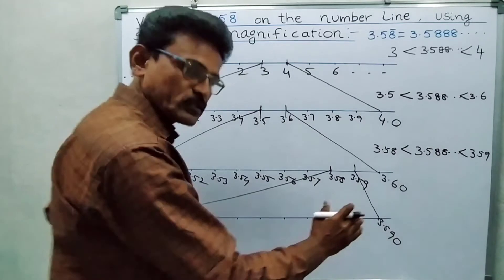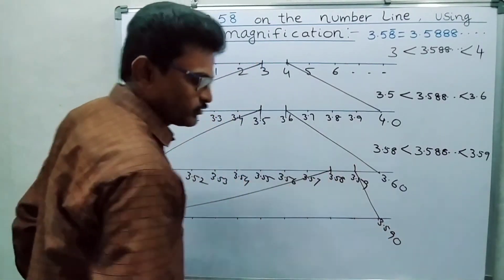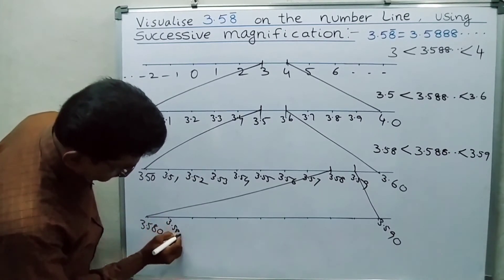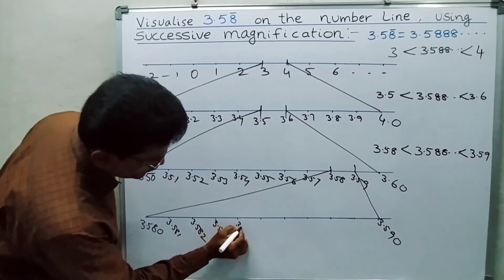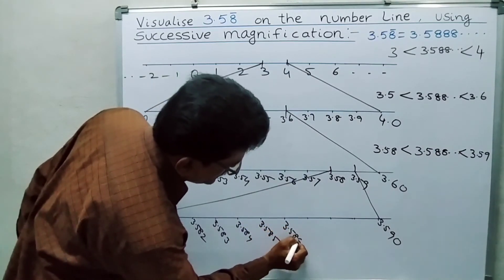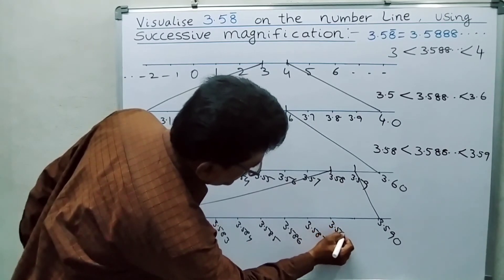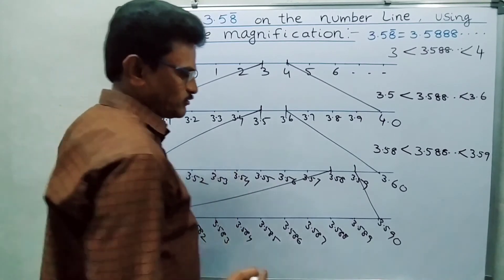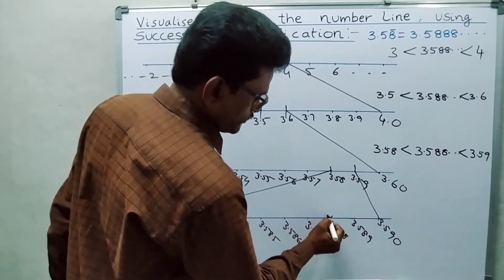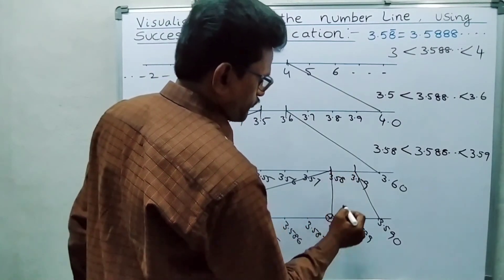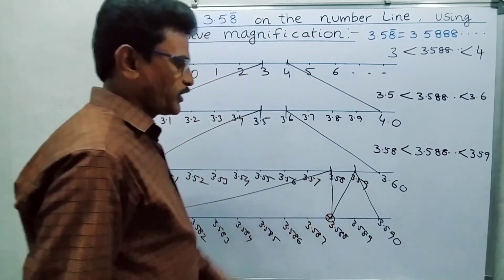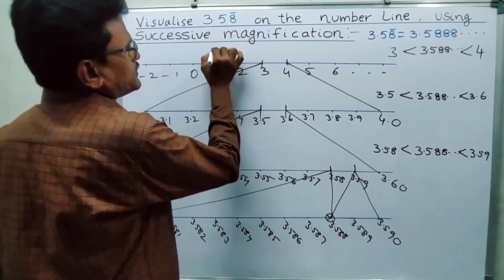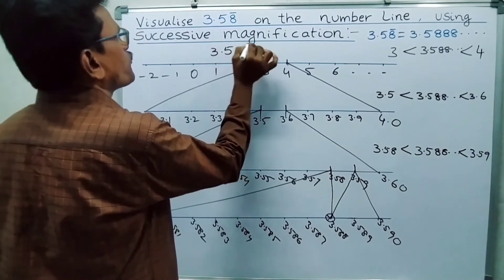Now, once again mark 10 equal parts — we are magnifying this portion 10 times. Write the numbers: 3.580, 3.581, 3.582, 3.583, 3.584, 3.585, 3.586, 3.587, 3.588, 3.589, 3.590. And where is our number? 3.588 is right here. So 3.58 bar — we have marked it on the number line up to 3 decimal places, and that is enough.